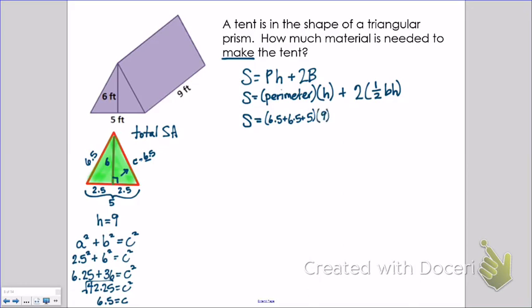So the height of the prism is 9. I'm going to add that to 2 times 1 half bh. That means I'm looking at the little b, which means I'm looking at the triangle. So the base of the triangle and the height make a right angle. So 5 and 6 make a right angle, so I'm going to do 1 half of 5 times 6.